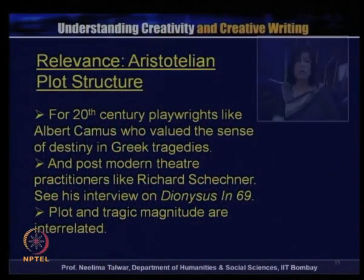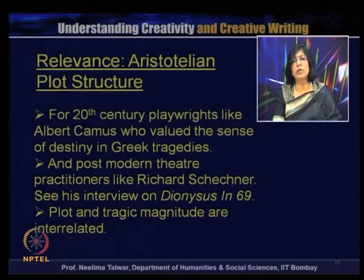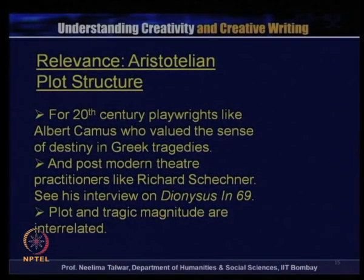On the one hand the Greek model has been rejected by some modernists, specially those who feel that the modern character had undergone such change that a very unified integrated structure of the Aristotelian variety did not hold the attention or world view of the writer and consequently the reader. At the same time, the notion of plot remains very crucial. There are twentieth century writers who swear by the Aristotelian plot structure. I had earlier mentioned Albert Camus who valued the sense of destiny in Greek tragedies while writing his plays, although he was so experimental in creating new fiction to fit his absurdist world view. When it came to writing plays he was greatly gripped by the Greek model because he felt that Greek tragedies offered a very deep sense of human destiny.